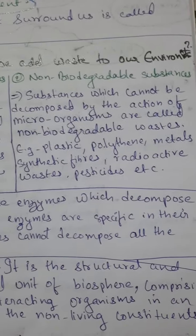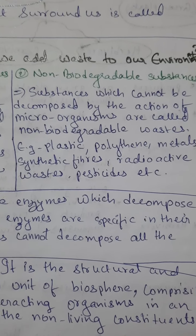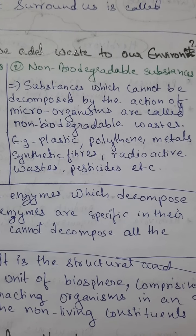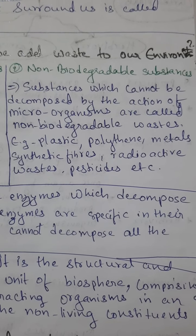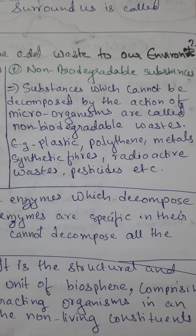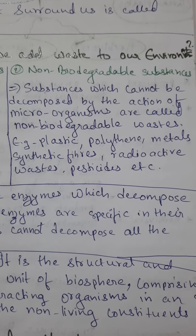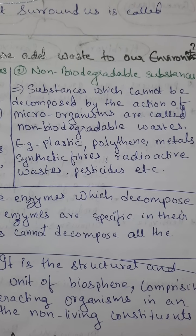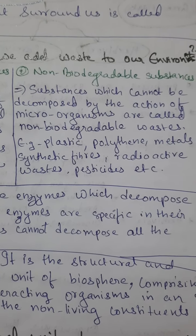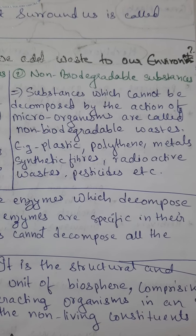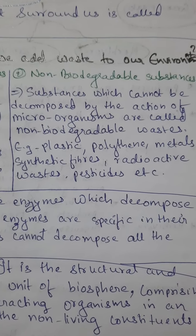Next, non-biodegradable substances. Substances which cannot be decomposed by the action of microorganisms are called non-biodegradable wastes. Examples: plastic, polythene, metals, synthetic fibers, radioactive waste, pesticides, etc. These will not be decomposed by microorganisms. We can find plastics, polythenes, or metals inside the earth as-is, even after many years. Hence they cannot be decomposed by microorganisms.